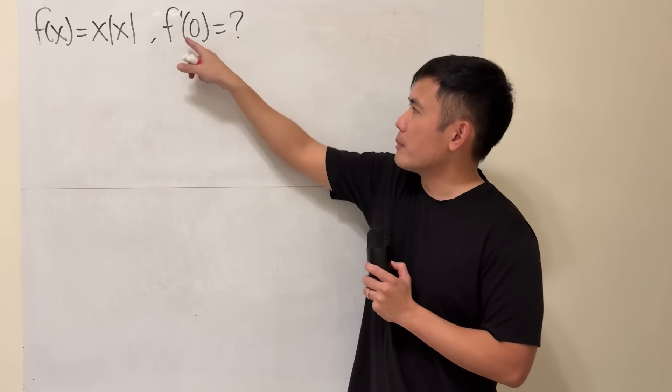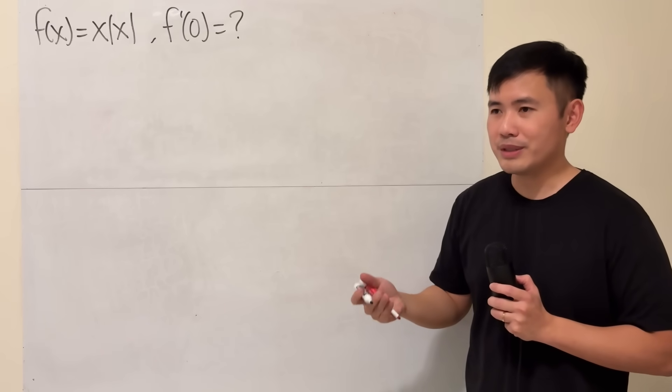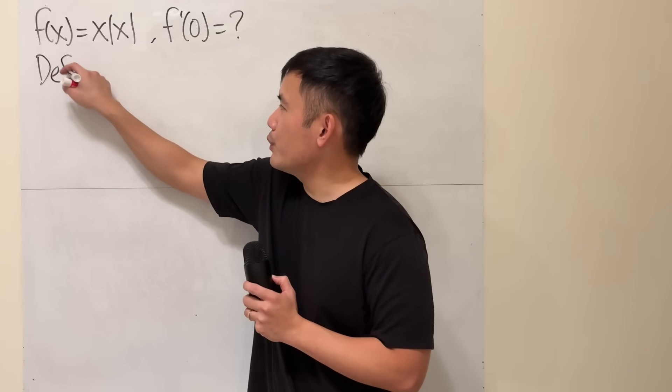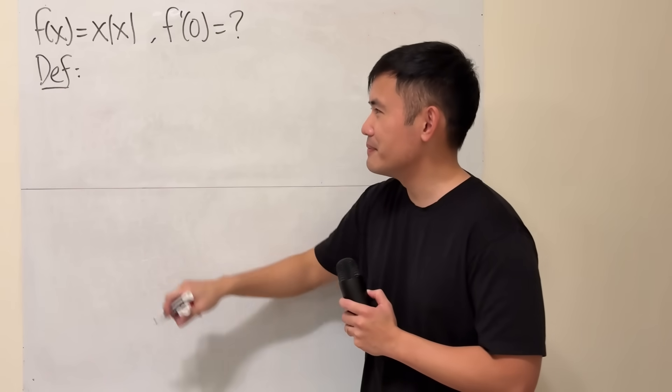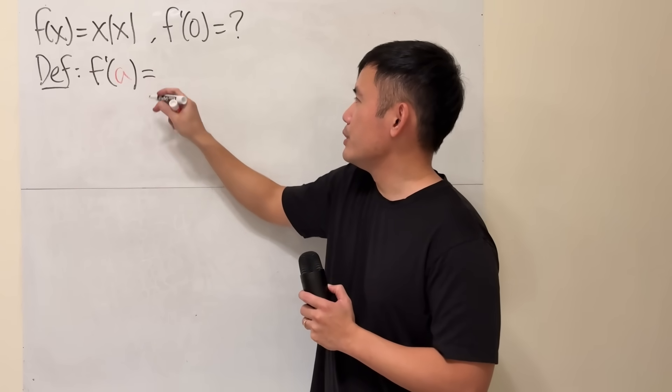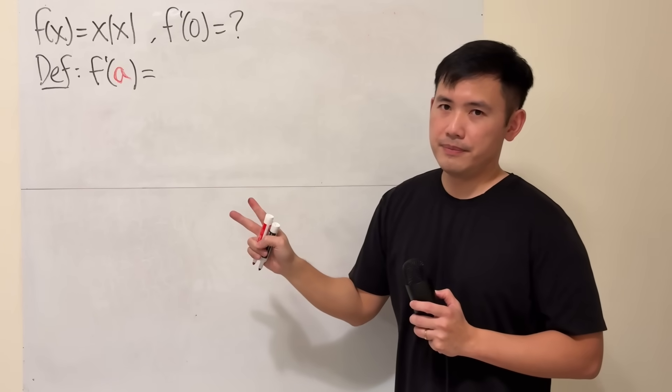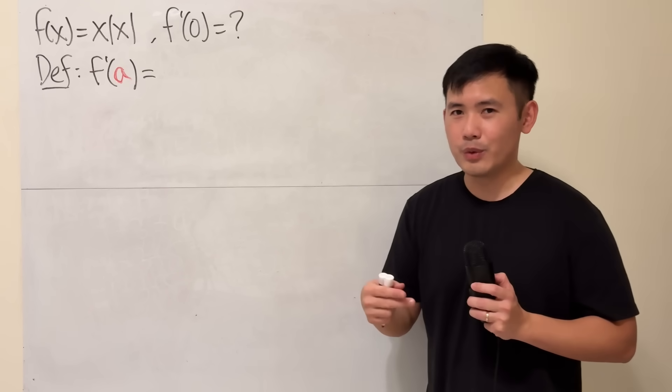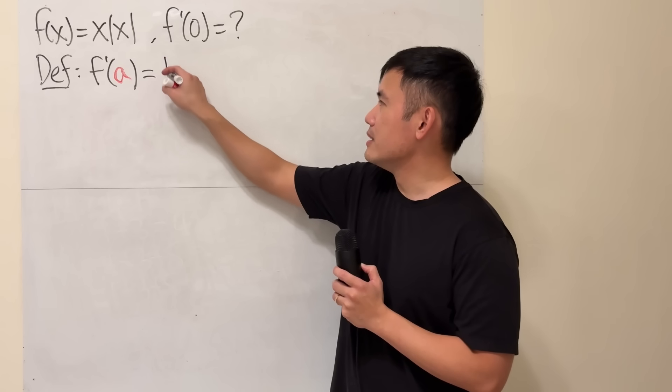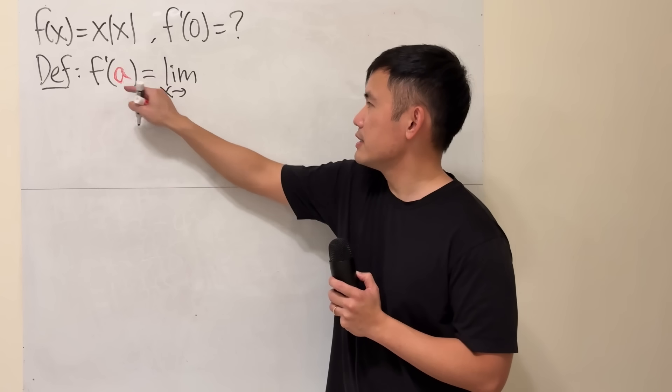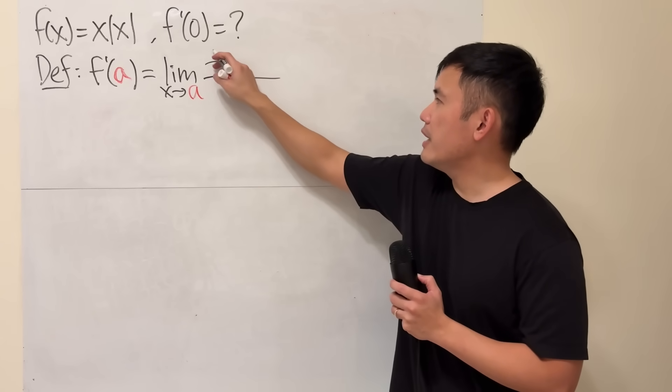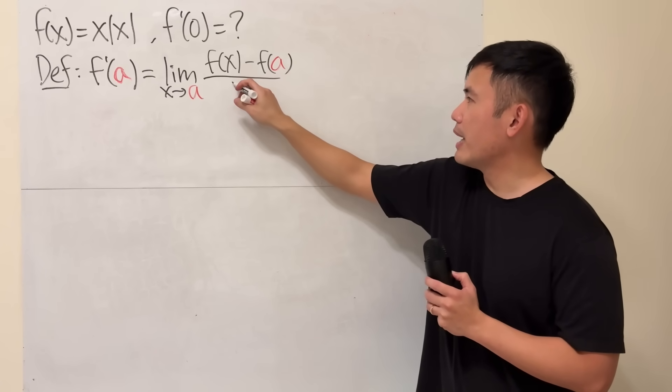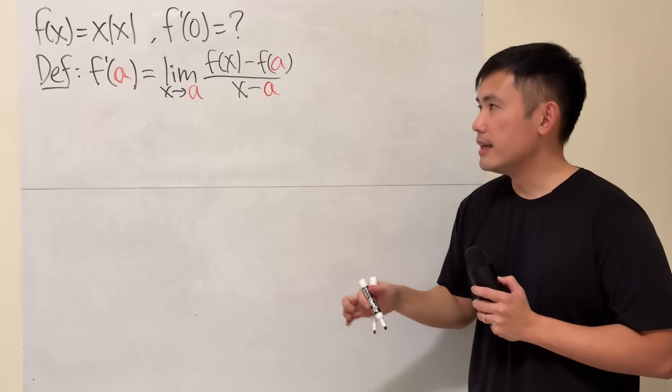We have to find f prime of 0 by the first principle or the definition of derivative. So recall that whenever we have the definition of derivative, f prime of some number a, this is equal to—we do have two versions. The first one I like better because it looks like a slope. The second one is the one with h. I'll use the first one. This is the limit as x approaching whatever this number is, and then we do f of x minus f of whatever this number is, and then divided by x minus a. So that's the definition.